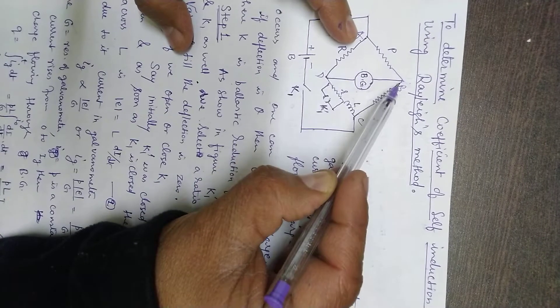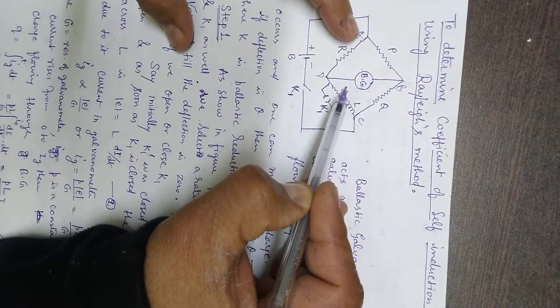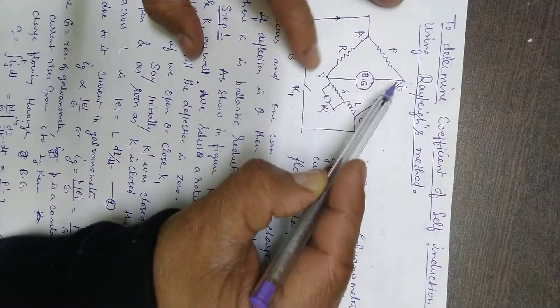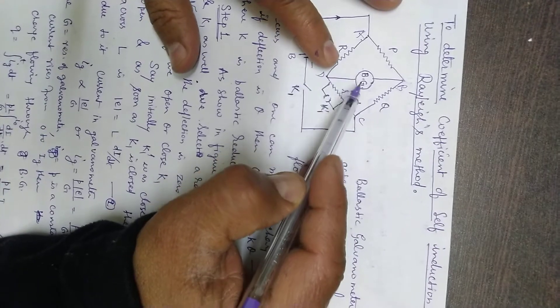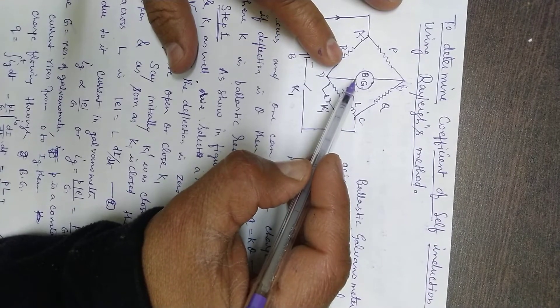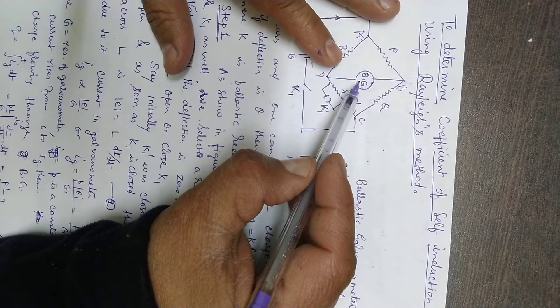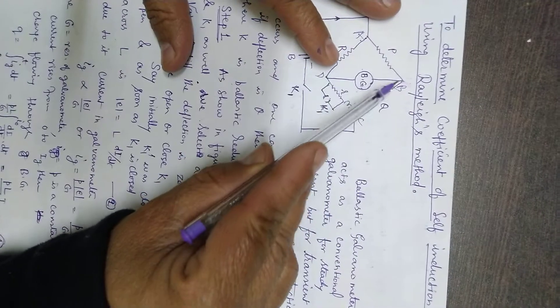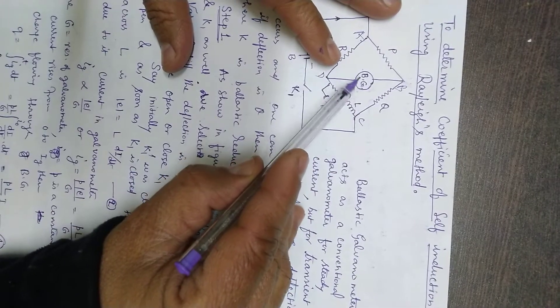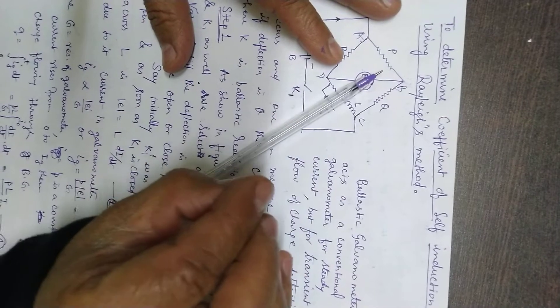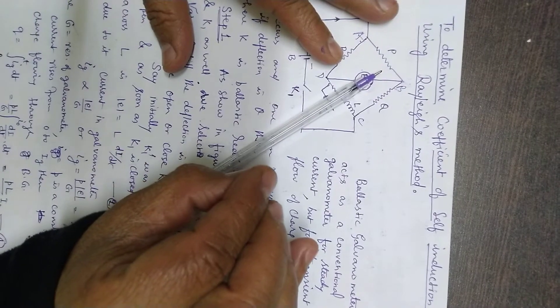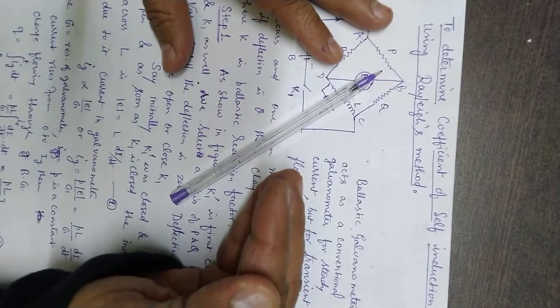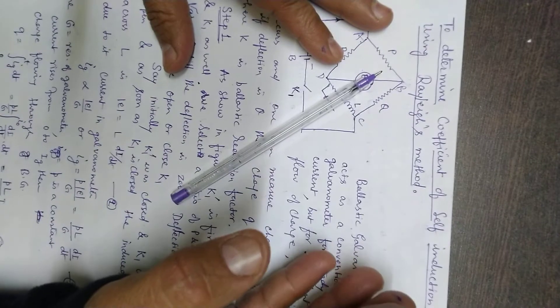The first difference is that there is a small resistance r connected in parallel to a plug key K1 dash, and the inductance is connected in series. The conventional galvanometer is replaced by a ballistic galvanometer. This is the most important difference. It is not an ordinary galvanometer which you have gone through in your 12th class.